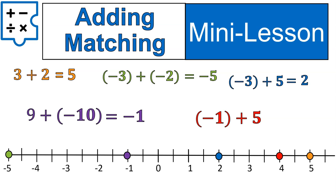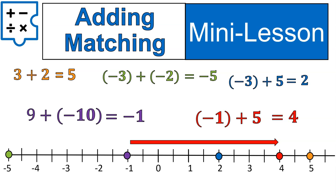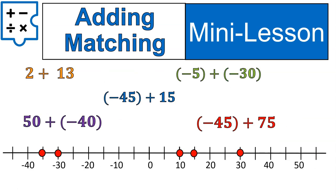Now we're going to do the final question: negative 1 plus 5. It's the only one that's left. We start at negative 1, we go forward or to the right five spaces, bringing us to positive 4. And that's how adding on a number line works. Let's do some more with adding on a number line.